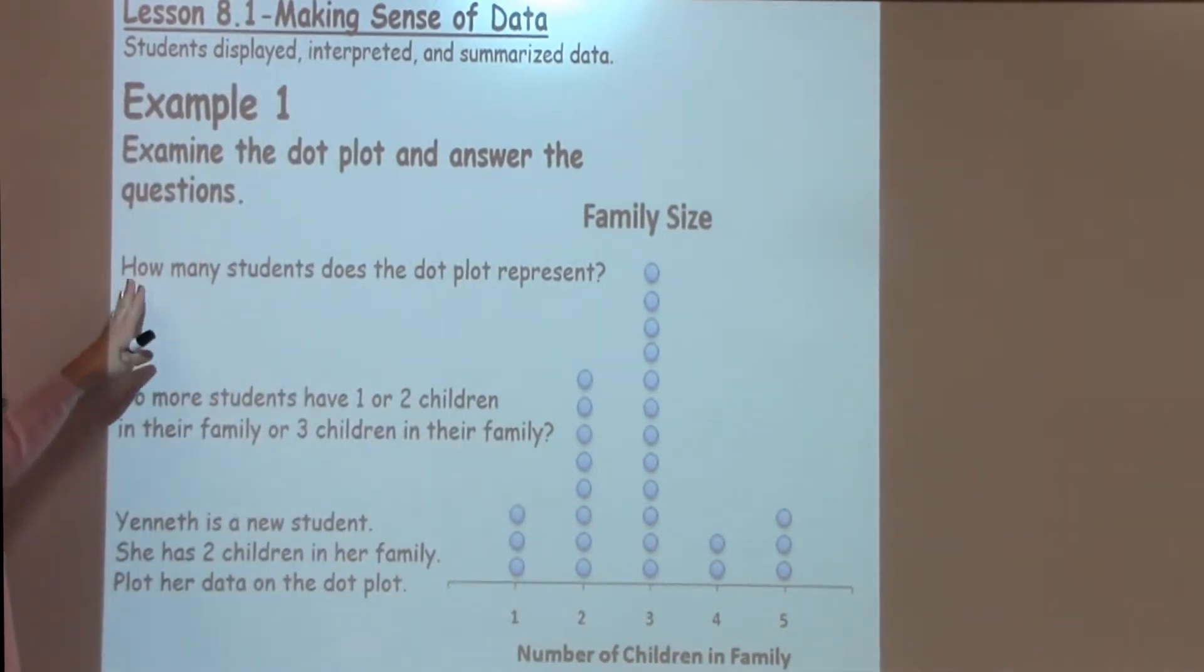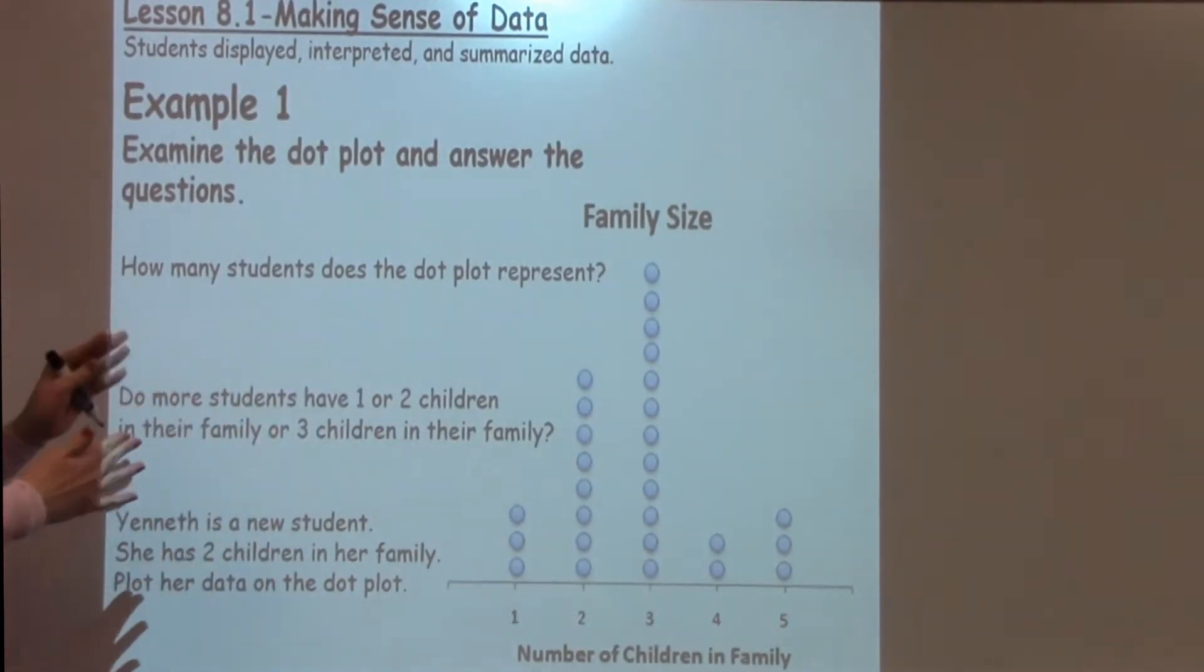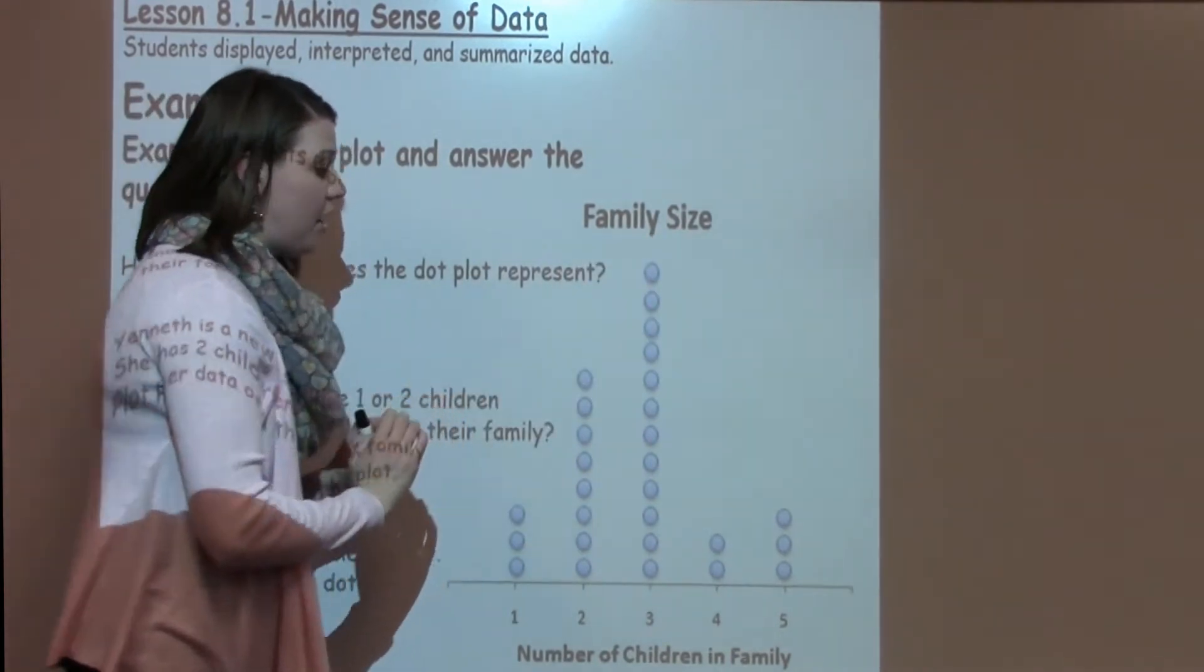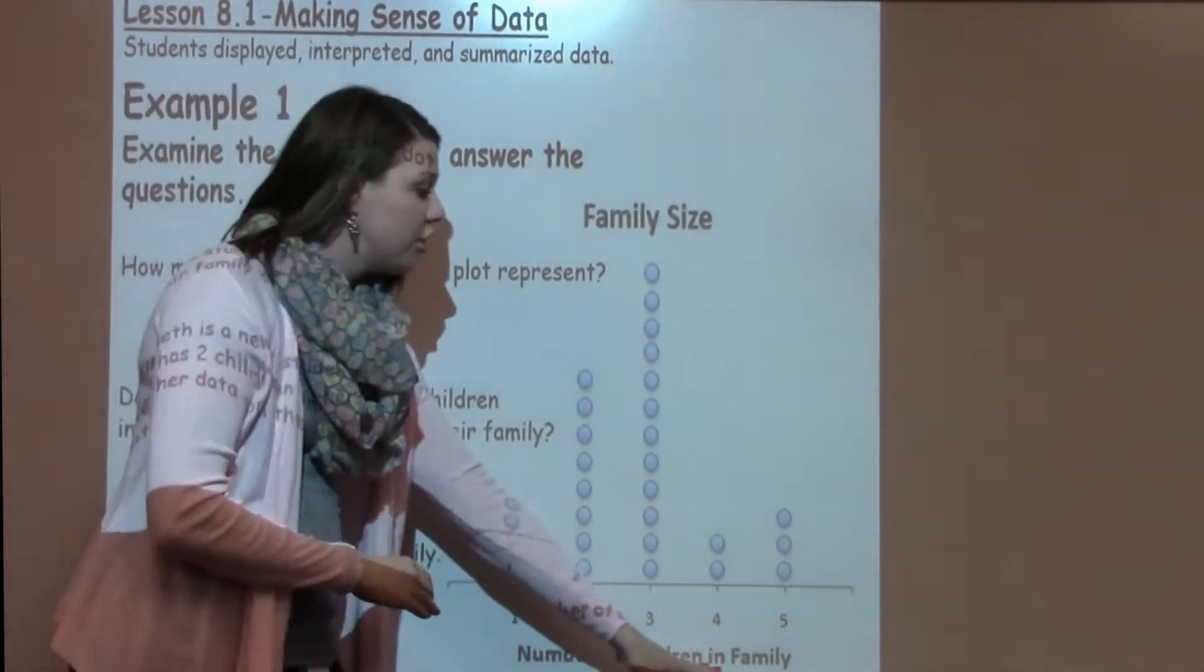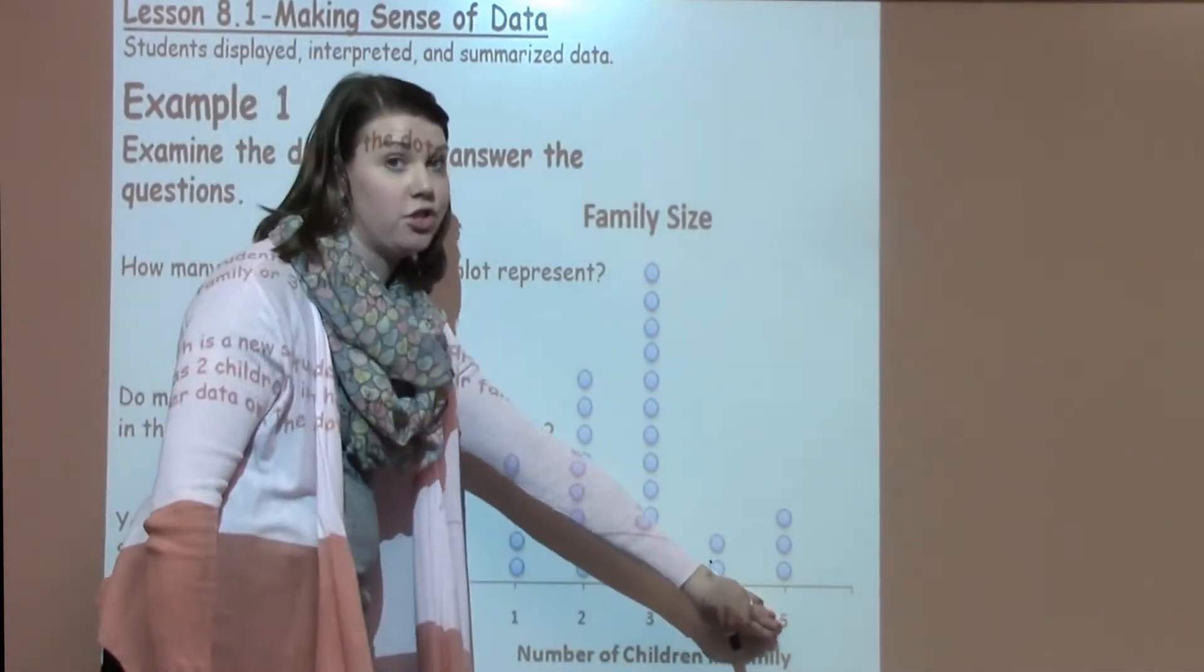So the very first question says, how many students does the dot plot represent? Well, the first thing we need to look at is we're looking at family size, which is the title of our dot plot. This is the number of children in a family. We can see we've got one, two, three, four, or five children in our family.